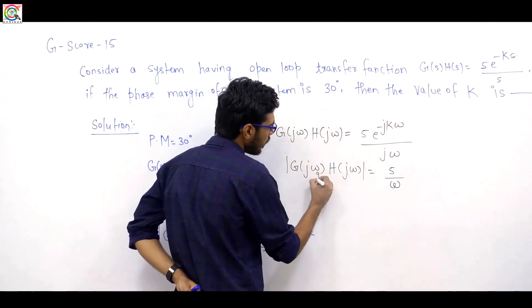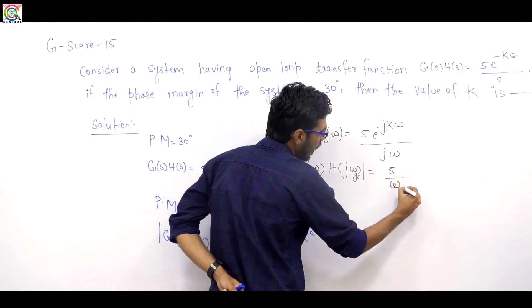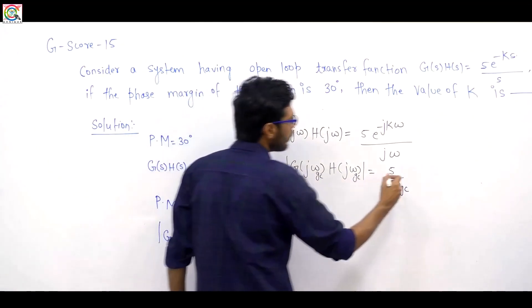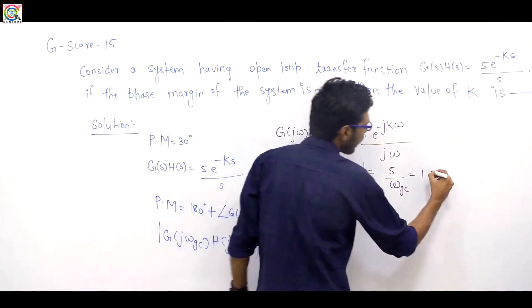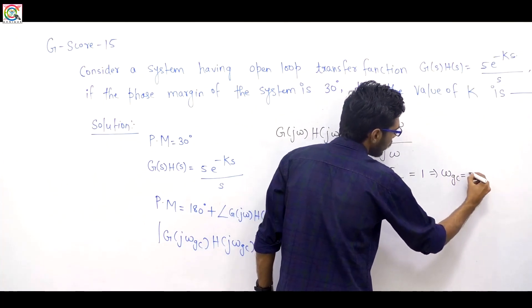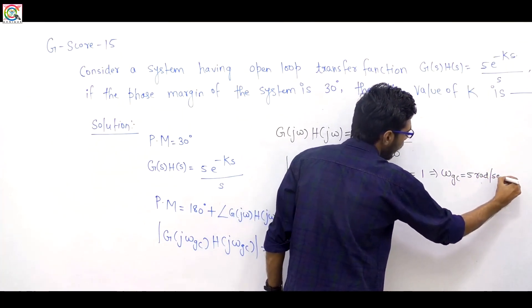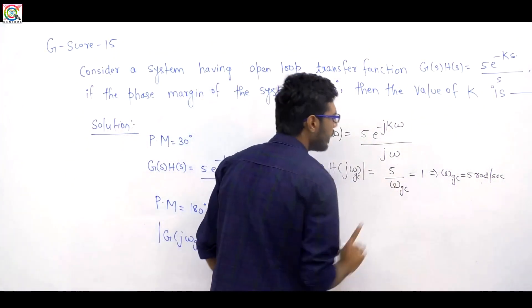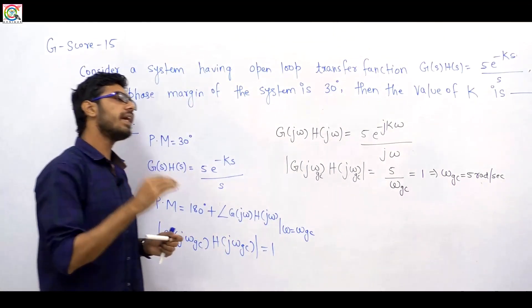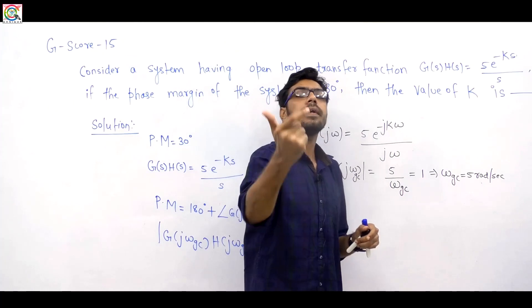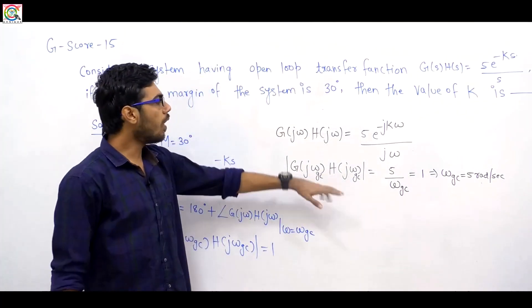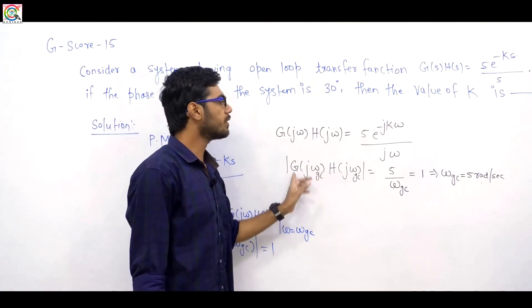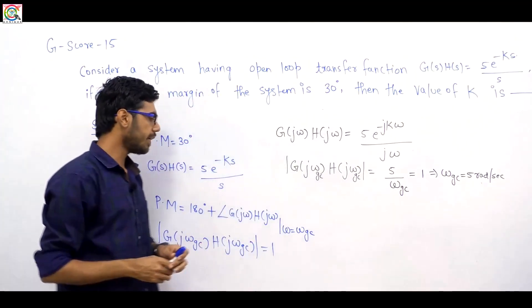At the gain crossover frequency, the magnitude 5/ω_gc = 1, so ω_gc = 5 radians per second. The gain crossover frequency is 5 rad/s — that is the frequency at which the magnitude of the open loop transfer function equals 1.